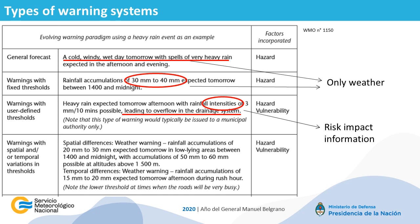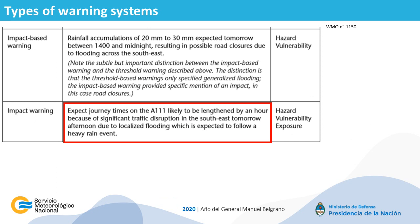In this slide, you can see in the last row how a complete impact warning would look. It is absolutely focused on the impact due to the three elements of risk: hazard, vulnerability and exposure. It refers to the length of journey time and traffic disruption due to localized flooding caused by a heavy rain event.